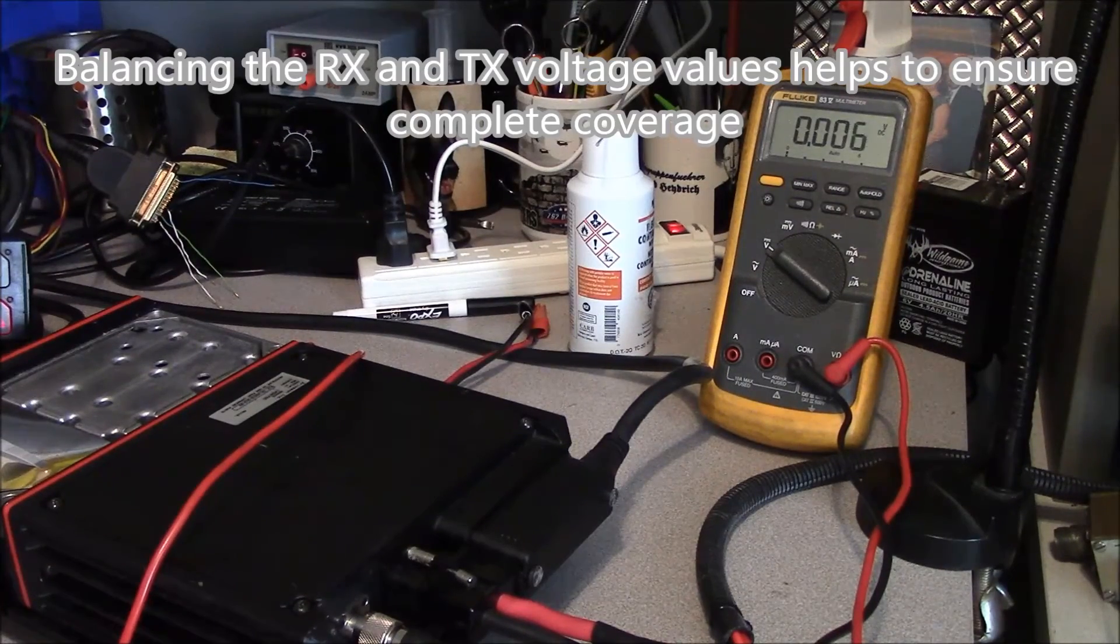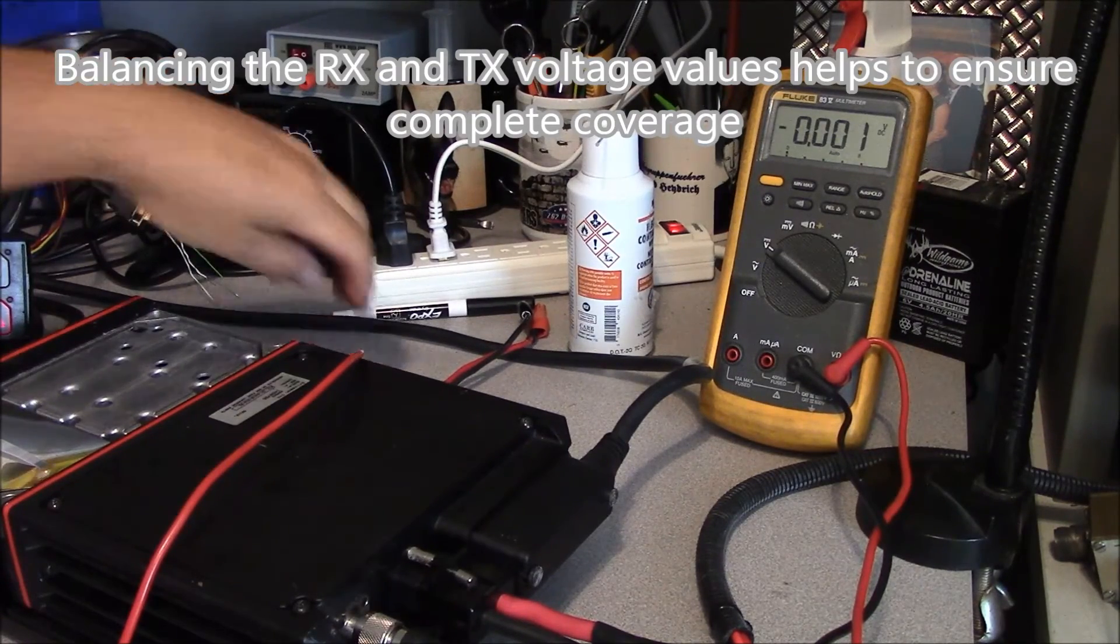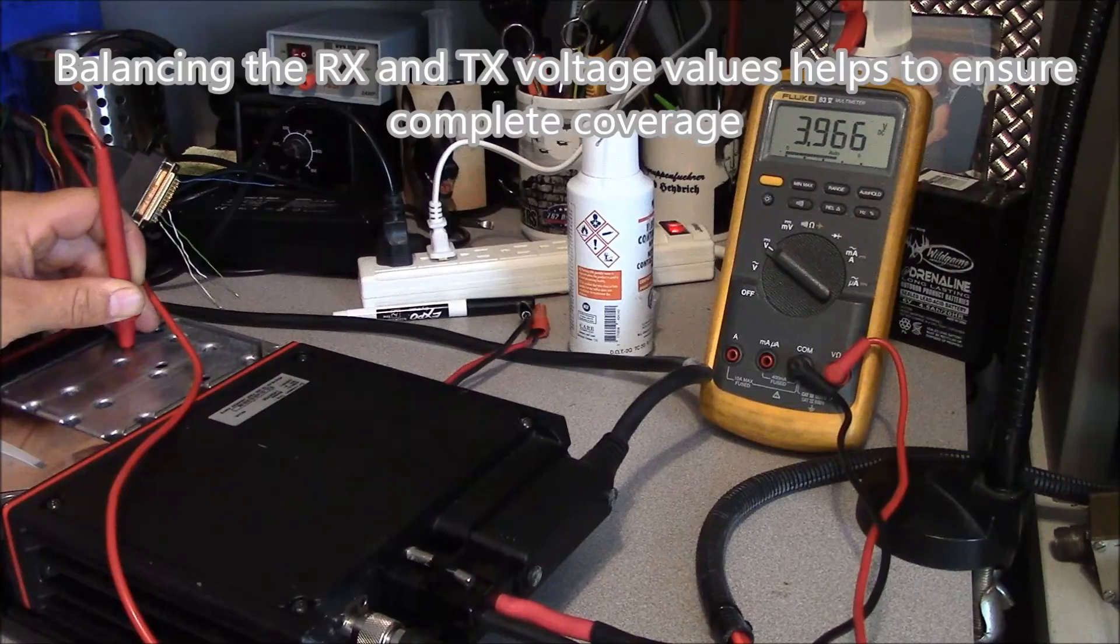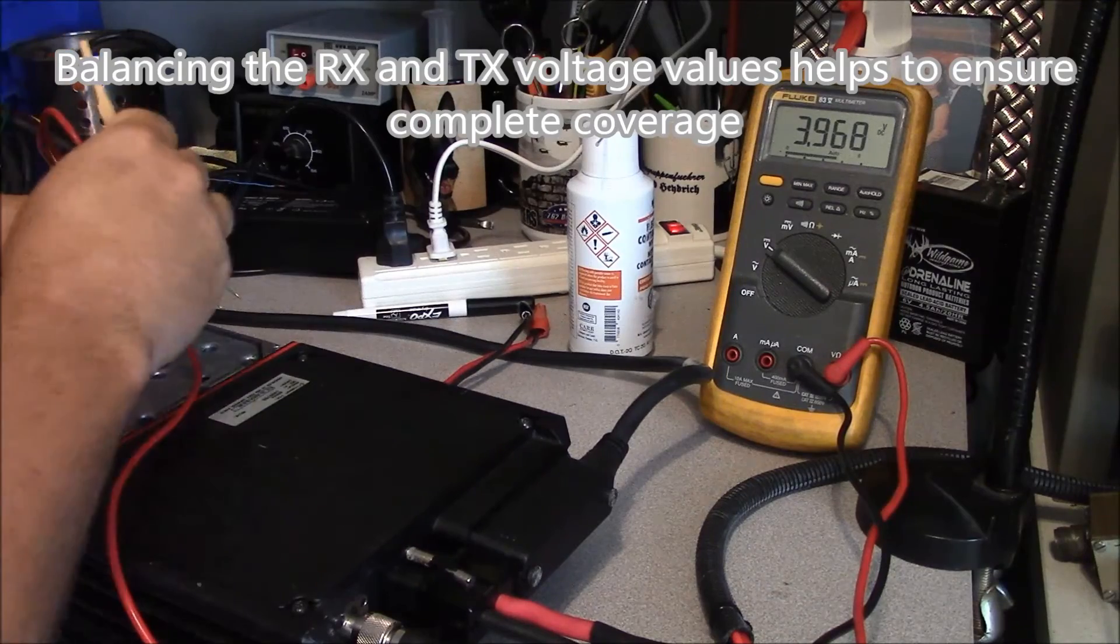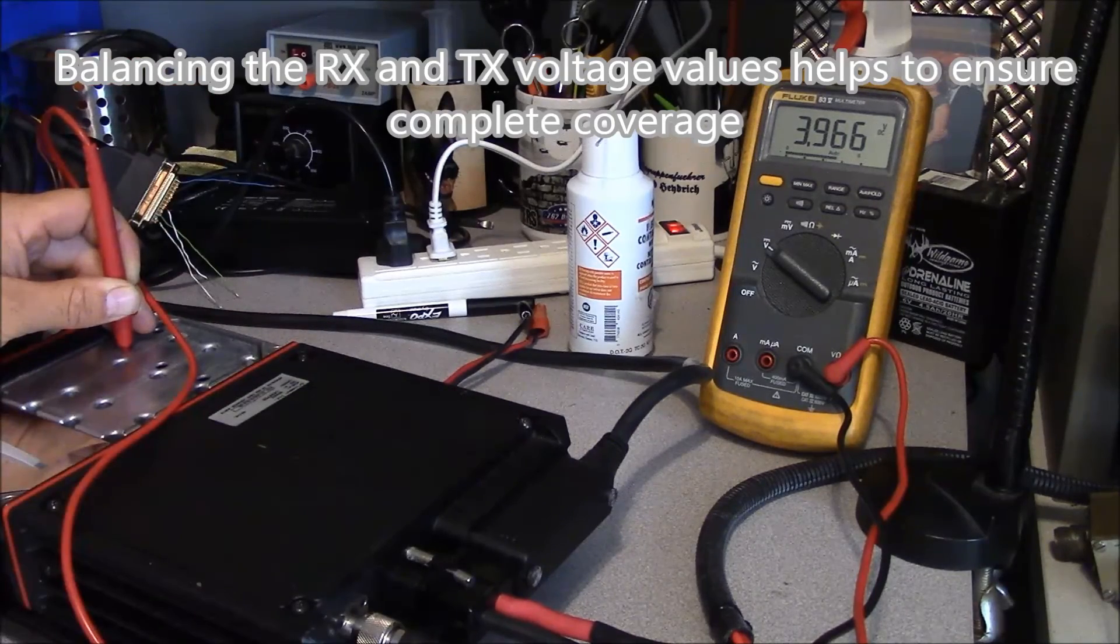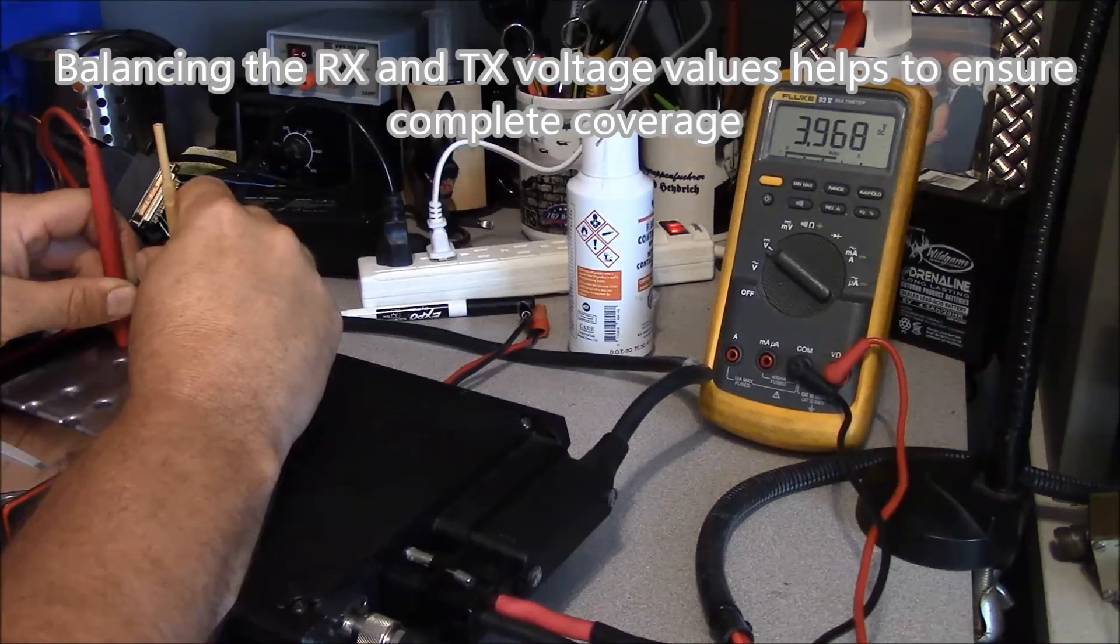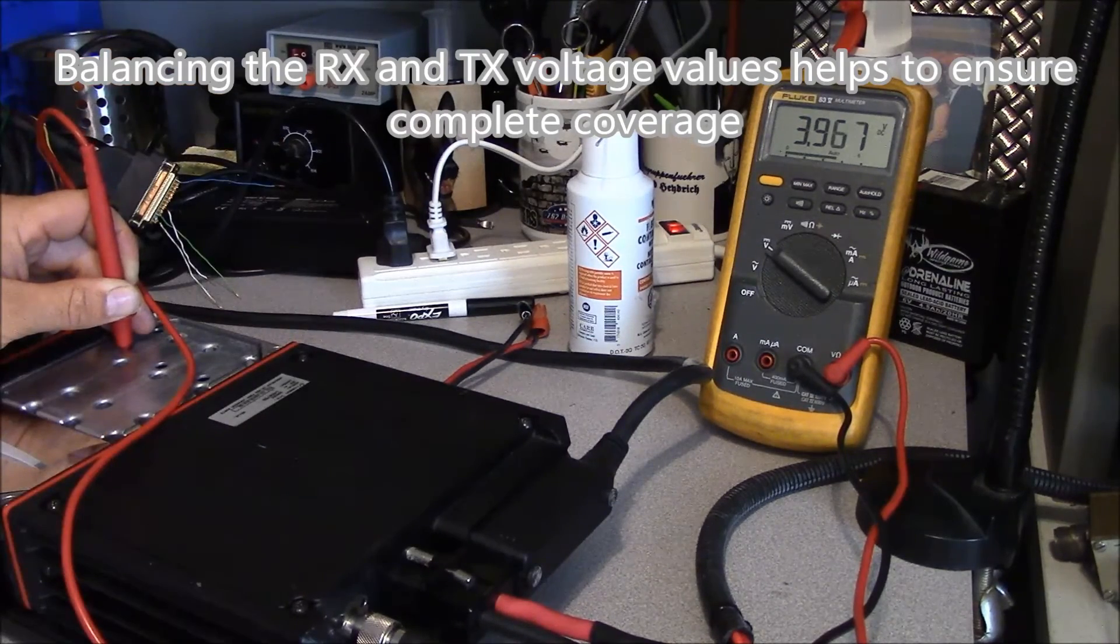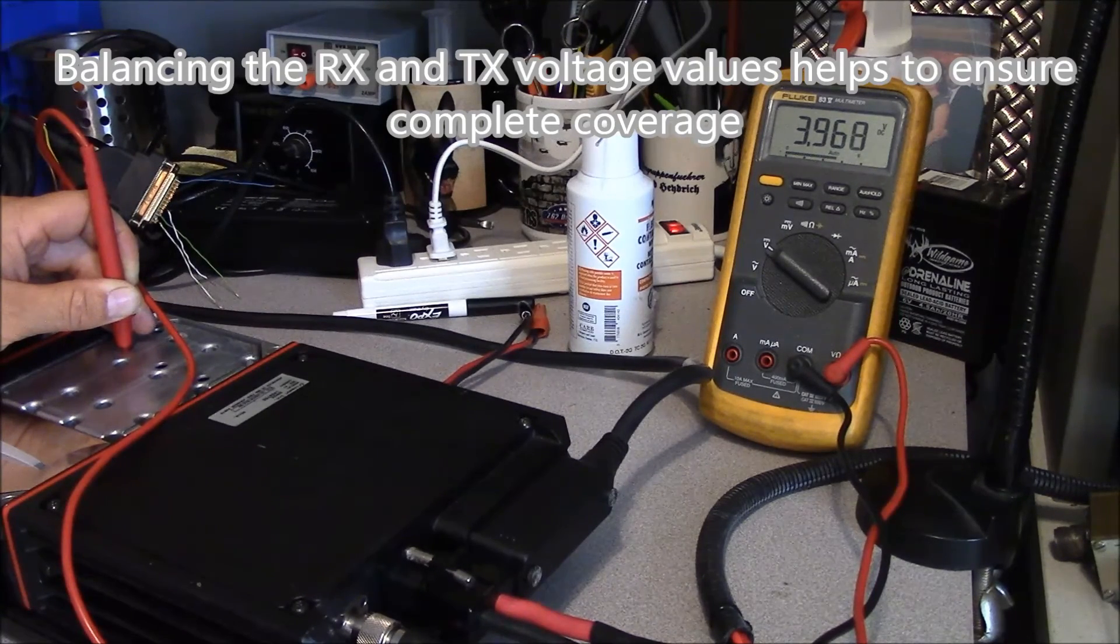While doing the transmit VCO, what I'll try to do is I will try to balance the voltages between the receive. As you can see, our receive VCO, at this point, is just under four volts. And under transmit, it's 3.2 volts. So, what I'll do is I will actually go in here and I will adjust my VCO so the voltages are the same. Now we're at 3.968.